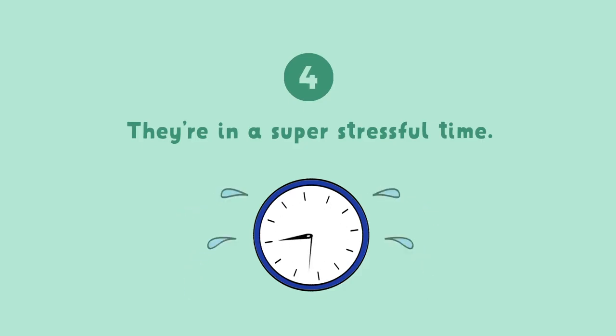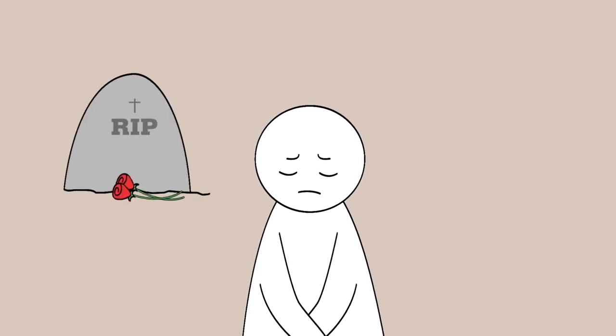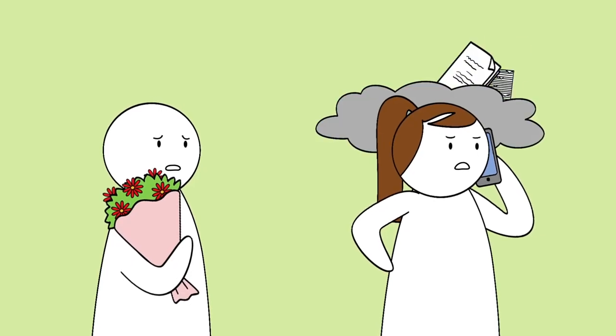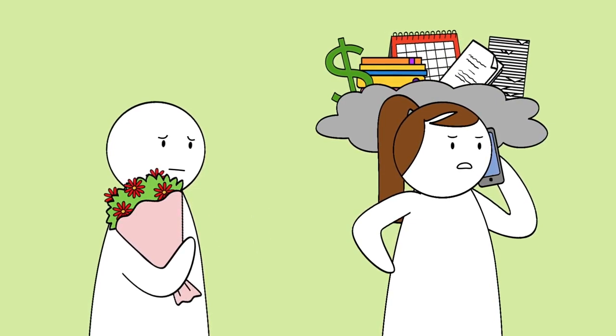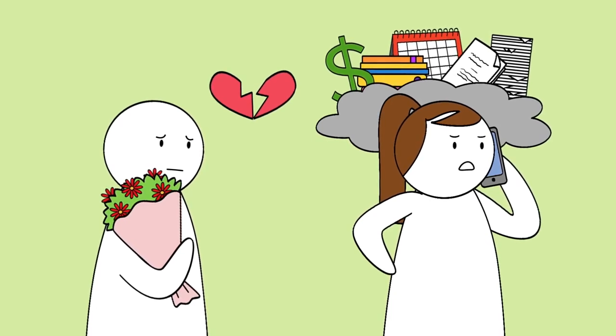Four, they're in a super stressful time. They might be juggling loss like family death or unemployment. Or they could be experiencing the opposite, where they're working too much and can't carve out time to be with you consistently. In this case, they have so much going on that the idea of dating seems nearly impossible. It would be more of a burden to their health and your own instead of benefiting both sides.